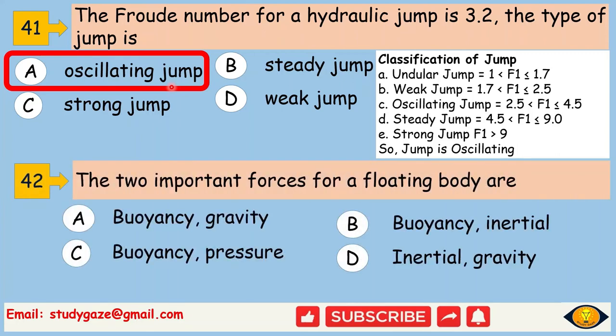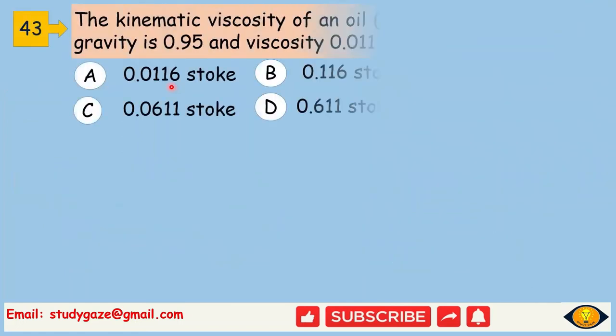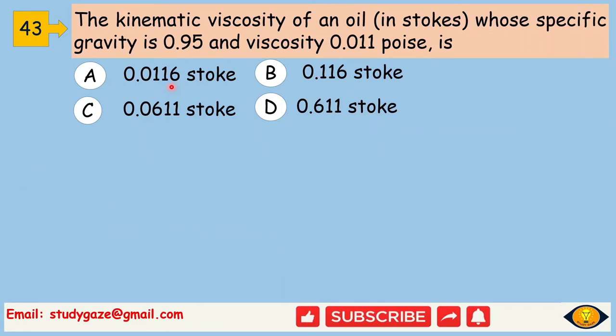The two important forces for a floating body are buoyancy and gravity. The kinematic viscosity of an oil in stokes whose specific gravity is 0.95 and viscosity 0.011 poise is 0.0116 stokes.